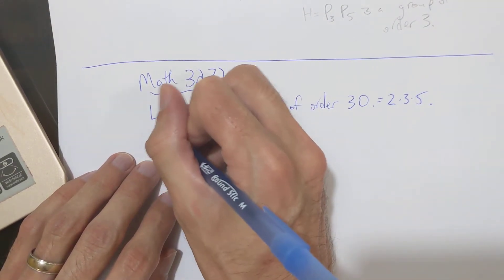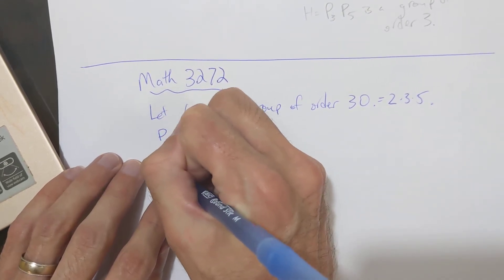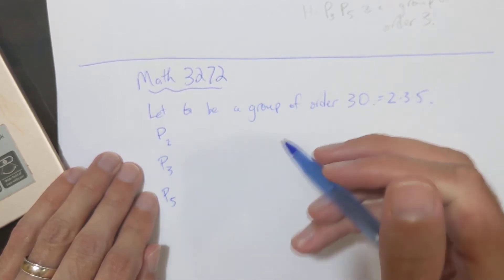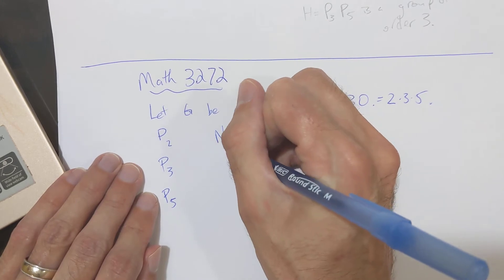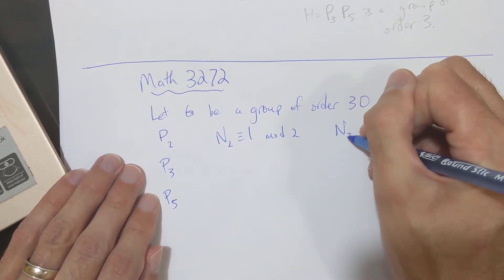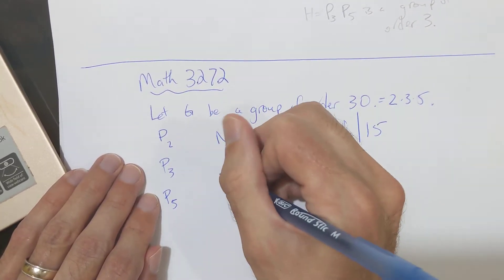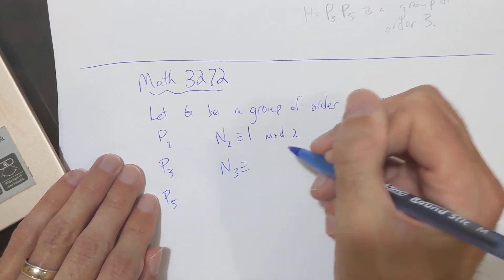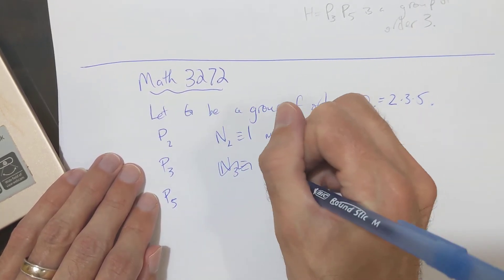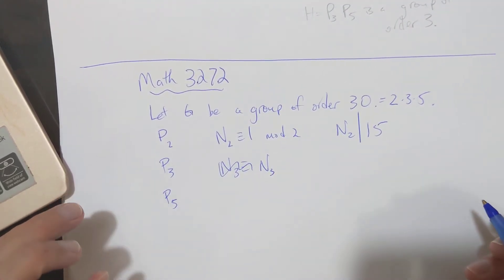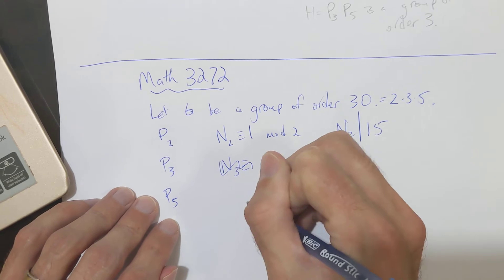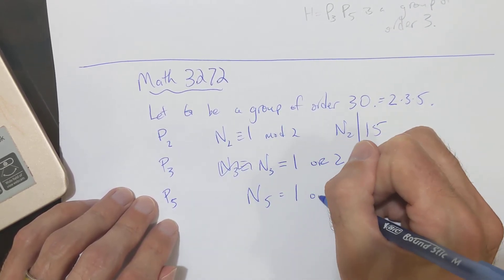Okay, so we constructed subgroups P2, P3, P5. P2 has two elements, P3 has three elements, P5 has five elements, and the number of conjugates of P2 is congruent to 1 mod 2, and N2 divides 15, and N3 is congruent to 1 mod 3 and divides 10. So basically, that tells us that N3 equals 1 or 10,